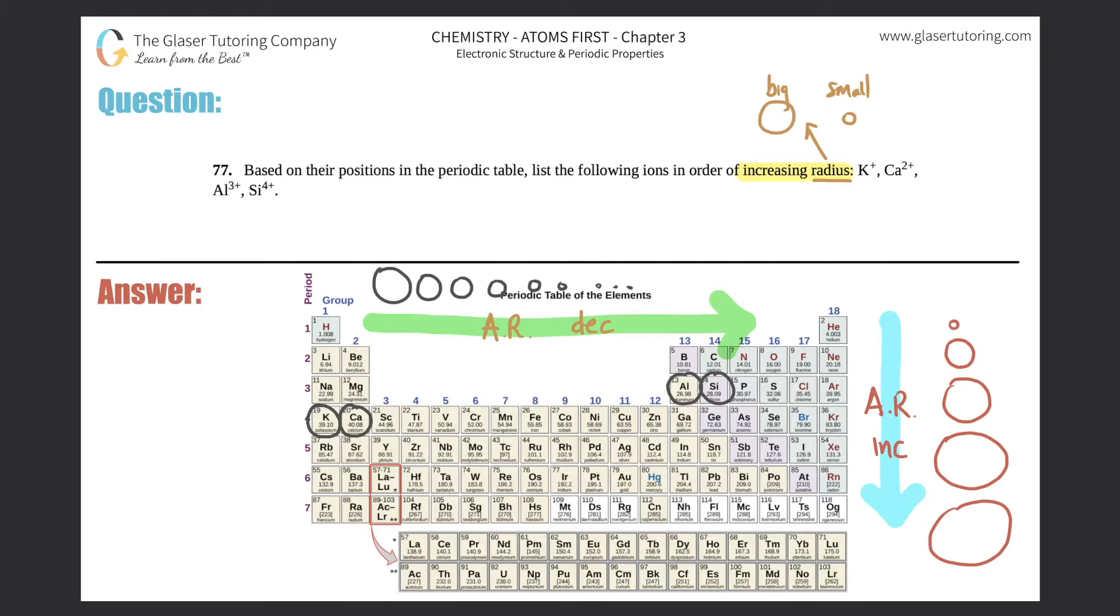So it seems like we could kind of group this into one trend. I would probably reference the period trend going from left to right because it looks like they're literally going from left to right. Now there's two different periods, but they're super far apart from each other. So we can basically just use the period trend here. Now they want us to go in order of increasing radius. So that means that you should start out small. So the smallest needs to go on the left-hand side and the largest radius, the biggest atom or ion in this case, needs to go on the right-hand side.